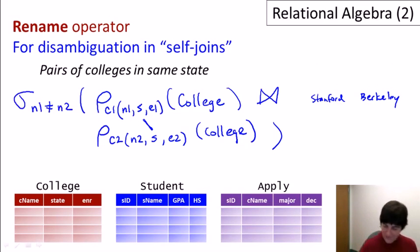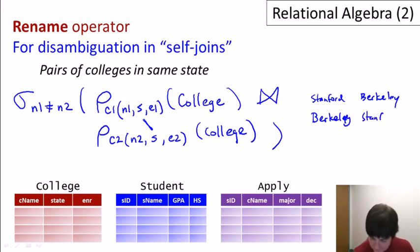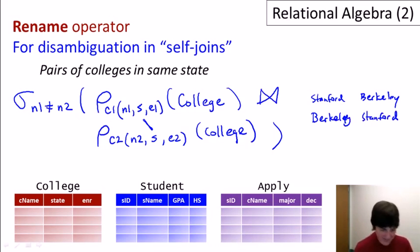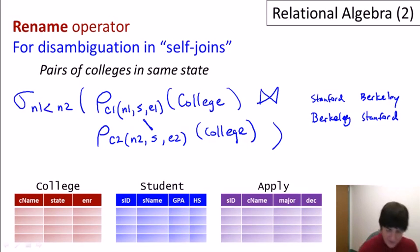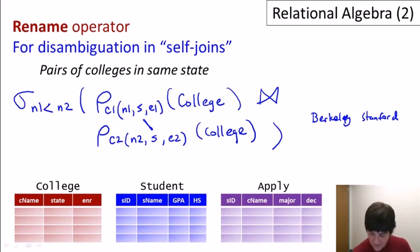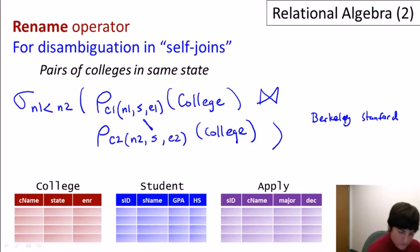But there's still one more problem: we'll get Stanford, Berkeley but also Berkeley, Stanford. The surprisingly simple fix is to replace the not-equals with a less-than condition. Now we only get pairs where the first name is less than the second, so Stanford, Berkeley goes away and we only get Berkeley, Stanford. This is our final query. The rename operator was absolutely necessary here — we could not have done this query without it.